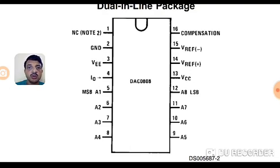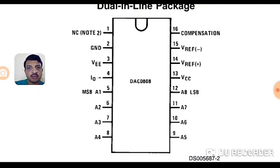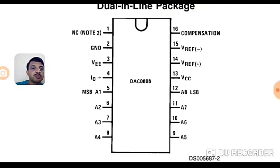For V-reference, depending on whether the output is negative-going, positive-going, or one-sided, you connect accordingly. Generally, V-reference positive is connected to plus 5 volts to give the I-reference for the DAC. Pin number 14 should be connected to a supply voltage through a resistor, which decides the I-reference. For example, for 2 milliampere I-reference, connect 10 volts with a 5 kilohm resistor — 10V divided by 5kΩ equals 2mA — and V-reference negative can be grounded.